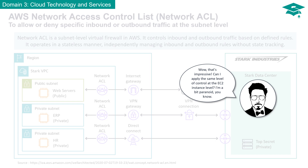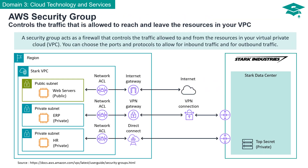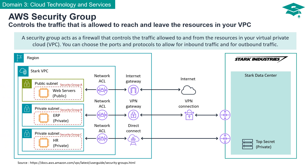Can I apply the same level of control at the EC2 instance level? An integral part of AWS security is the security group. Think of it as a vigilant guardian that controls the flow of traffic to and from the resources within your virtual private cloud. Much like a firewall, a security group enables you to specify which ports and protocols are allowed for both inbound and outbound traffic, thus ensuring that your resources are protected and only interact with the necessary connections.